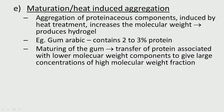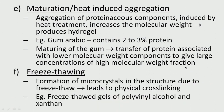Another physical method is maturation or heat-induced aggregation — aggregation of proteinaceous components induced by heat treatment. Freeze-thaw is also used: formation of microcrystals in the structure during freeze-thaw cycles leads to physical cross-linking, for example freeze-thaw gels of polyvinyl alcohol (PVA) and xanthan. When temperature is reduced, microcrystals form and that leads to physical cross-linking. All these are physical-based methods.